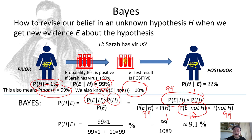That gives us 99 over 1089, which is about 9.1% — matching the result from the visual explanation. As an aside, I'm using percentages here, but in practice probabilities are expressed on a 0 to 1 scale. For example, 50% becomes 0.5, 100% becomes 1, and 9.1% becomes 0.091.